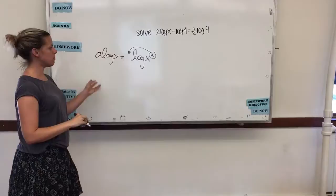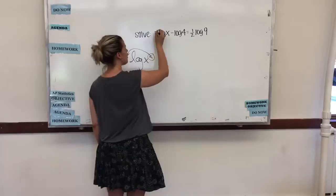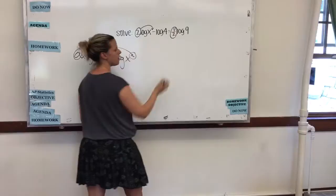This problem is going to use it in the opposite way. We're going to take our multiplication on the front and put it up top. So I'm going to take my 2 and put it up top there as an exponent. I'm going to change this coefficient, which is multiplication, to an exponent.